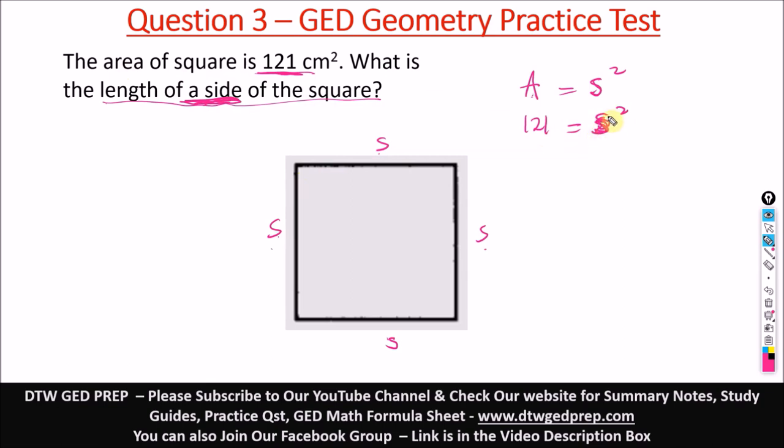When you have something like s² and you are told to just find s, what you do is you square root both sides. When you square root s², it's just going to give us one s. And when you square root 121, it's going to give us 11. So s = 11 centimeters.